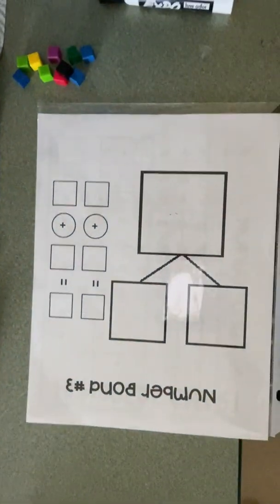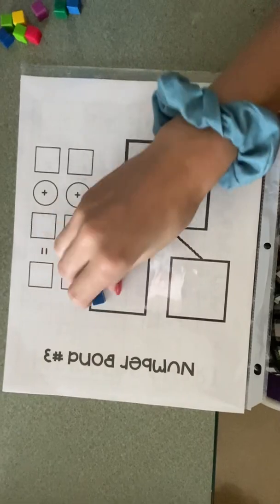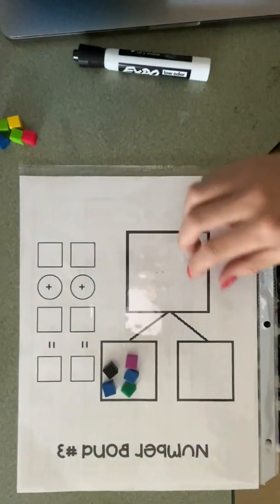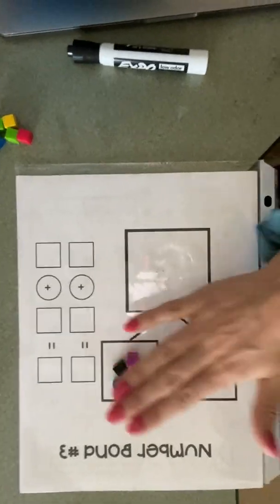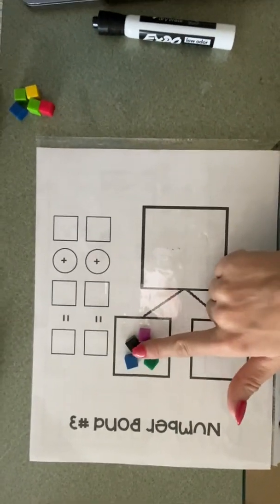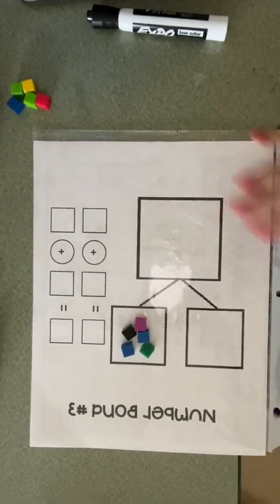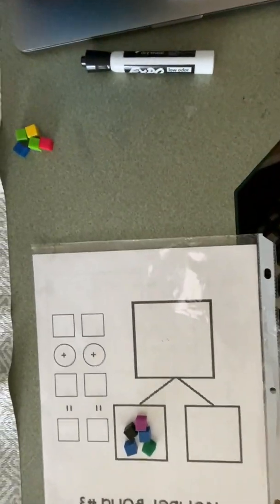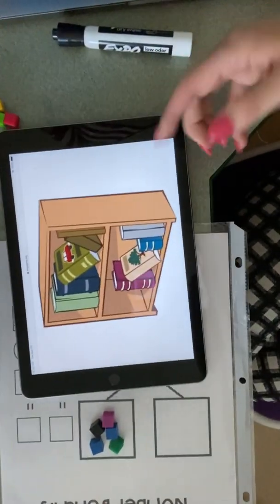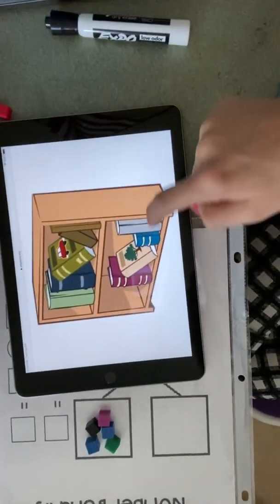Okay, so I'm going to take five of my cubes. One, two, three, four, five. And I'm going to put them in my first part box because that's going to be my first part. Okay. And then I'm going to go back to the picture and say, okay, that's my top. That's my first part. What's my second part? The bottom row.